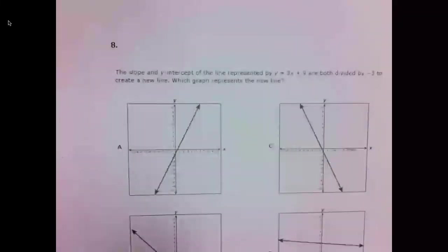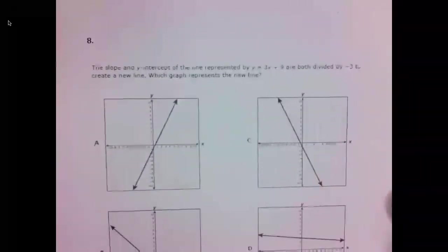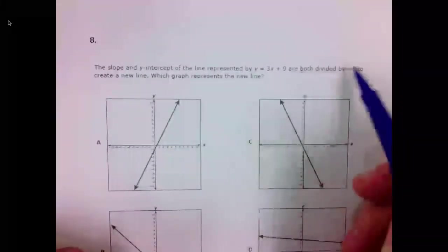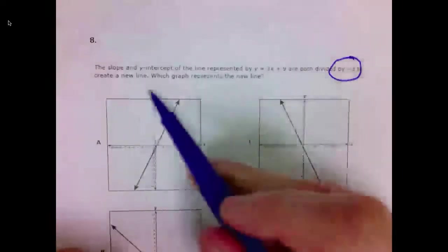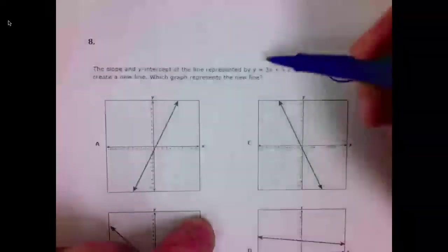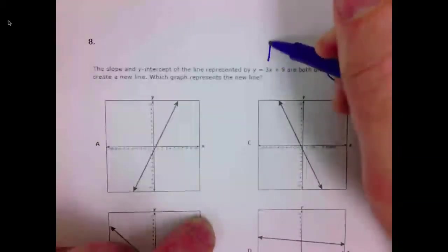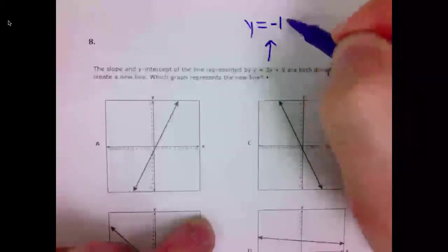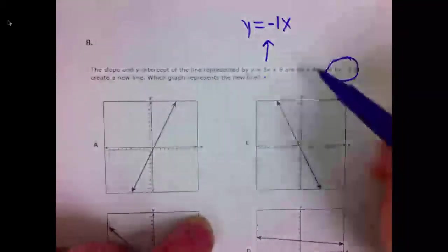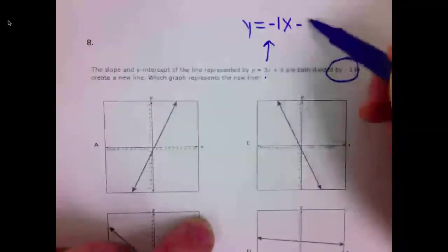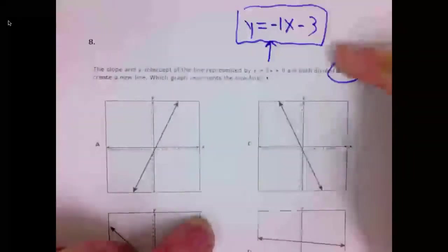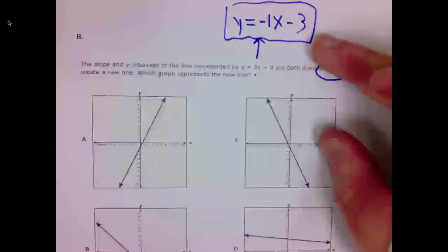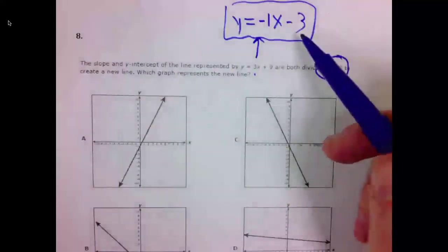Number 8. It says, the slope and Y-intercept of the line, Y equals 3X plus 9, are both divided by negative 3 to create a new line. Which line represents the new one? Well, if I divide both of these by negative 3, I would get Y equals. 3 divide negative 3 is a negative 1X. 9 divide negative 3 is a negative 3. You could certainly graph this in your calculator and match it up, but I think we can solve this without doing that. I see the Y-intercept is negative 3.